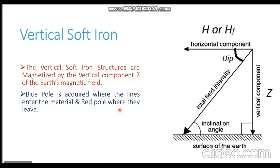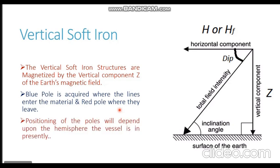Visualizing the forward mast on a ship at the north pole: with the vertical lines of force going vertically downwards, they will be entering from the top of the mast — so the top of the mast acquires a blue polarity, because wherever field lines enter into a structure a blue pole is acquired. These vertical lines going downwards will come out from the base of the mast, so the bottom of the mast acquires red polarity, because wherever lines of force leave a structure it acquires a red polarity.